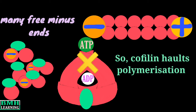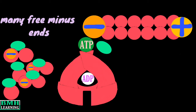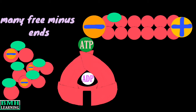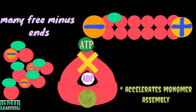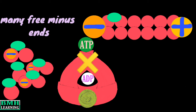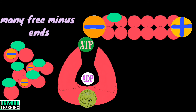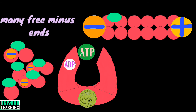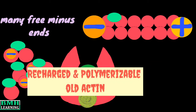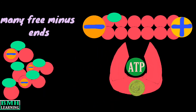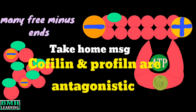Now suppose the cell has a need for actin polymerization. First, cofilin needs to be removed, since it is the one blocking ADP-to-ATP exchange. The cycle becomes more interesting when another protein known as profilin binds to the actin. Profilin accelerates the assembly of actin monomers into the filament at the plus end. The binding of profilin to actin causes the opening of the nucleotide binding cleft, which in turn facilitates the exchange of ADP with ATP. Now we have recharged actin — this polymerizable ATP-actin is ready to be added at the plus end. The take-home message is that cofilin and profilin are antagonistic players.